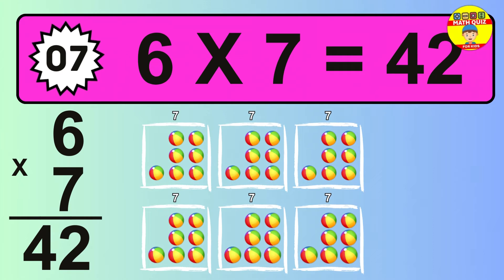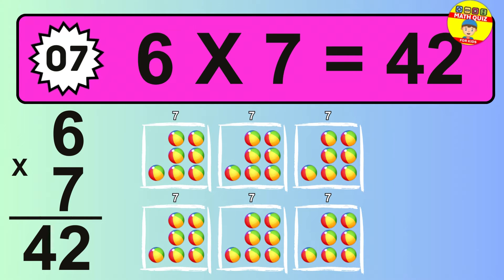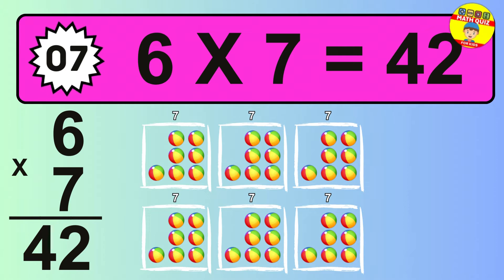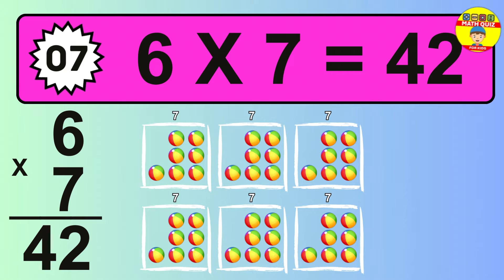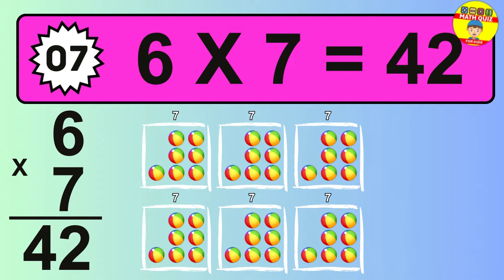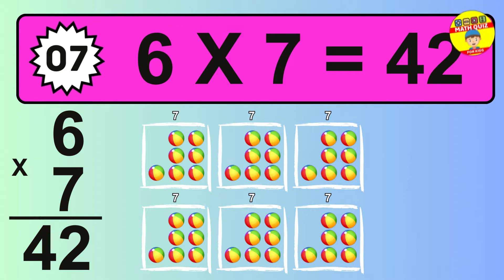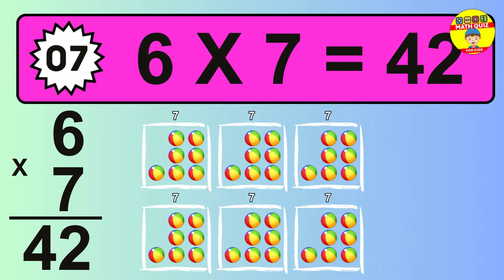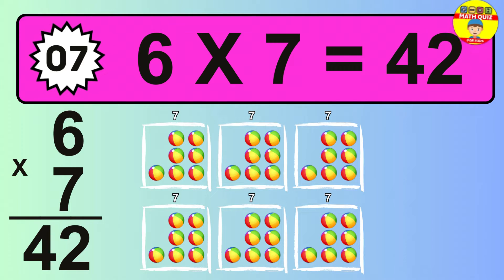Question 7. 6 times 7 equals what? To calculate, we have 6 groups with 7 balls each one. So, how many balls do we have? 42 balls.